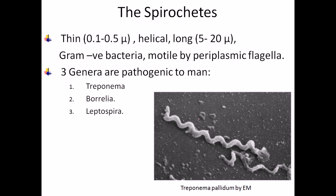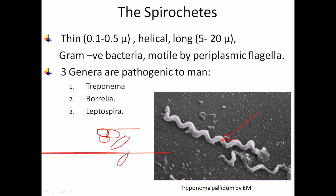As we can see in this picture, spirochetes are really thin and helical in nature — this is their characteristic shape. When you look through a microscope, instead of a round shape, you see a spiral coiling structure. This coil structure is a very important characteristic of spirochetes. They are also motile, moving from one place to another using a screw-like motion. These bacteria are gram-negative.